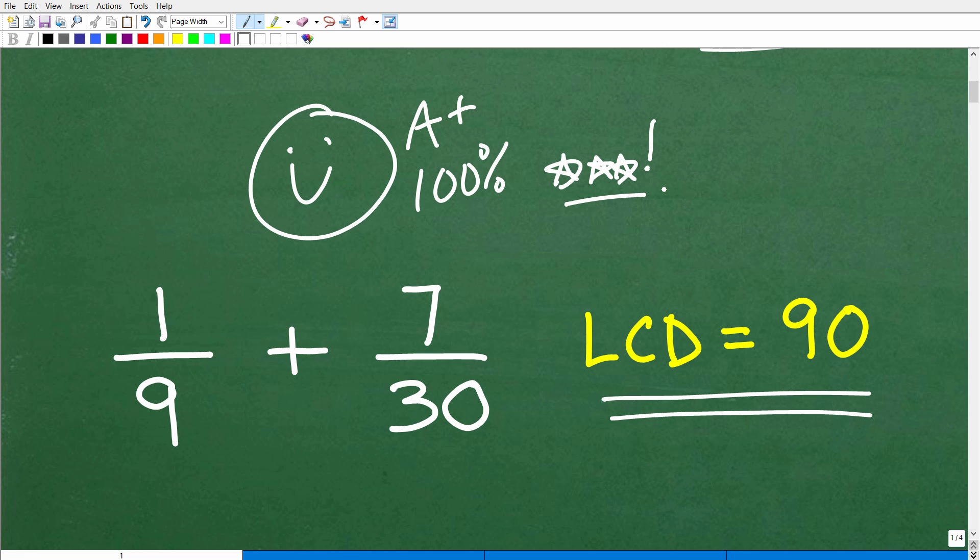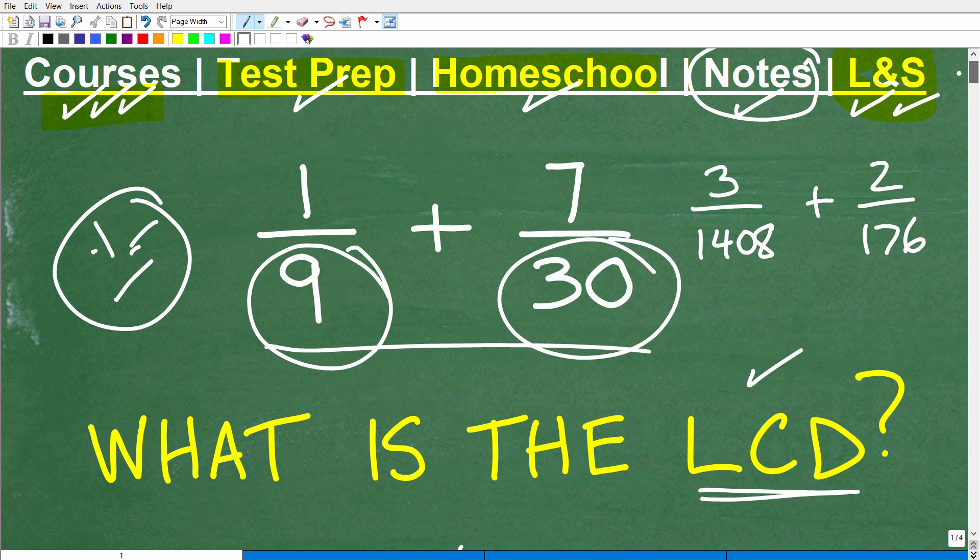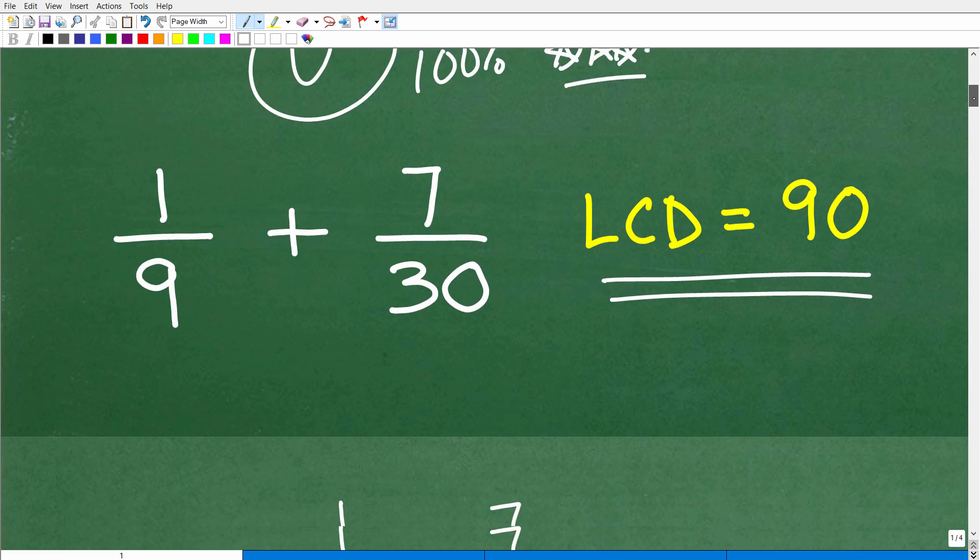If you answered 90, let me give you a nice happy face, an A plus, 100% and a few stars. But here's the bonus question: What is the LCD? Can you give me a series of steps or a recipe or formula? Some of you could say, well, I just knew the answer was 90. If you got the answer right, that's great. But if I gave you a problem like this, could you duplicate your success in finding the LCD?